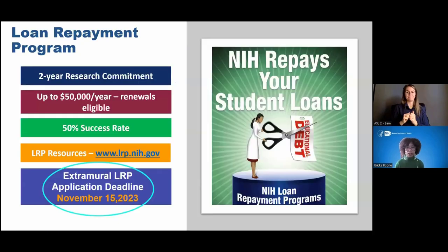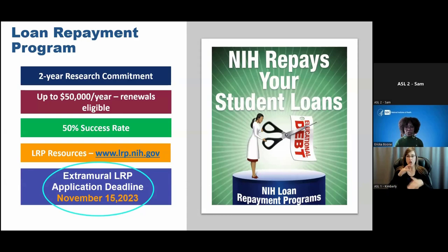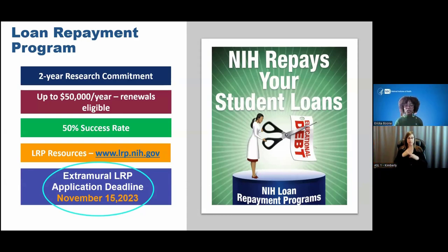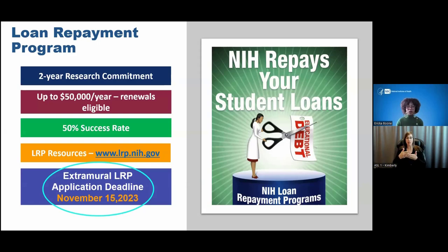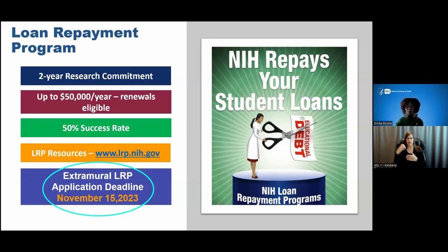The loan repayment program can be a real career saver. Loan debt is recognized by many early career investigators as one of the biggest barriers to starting and continuing their research. In exchange for a two-year commitment to perform research in an NIH mission-critical research area, NIH can commit to repaying up to $50,000 in eligible student loan debt. The overall success rate for this program is around 50%. There are six different types of LRPs to choose from. For more information, check out www.lrp.nih.gov, reach out to your program officer, and contact the loan repayment program directly.